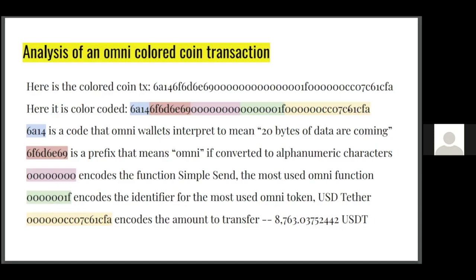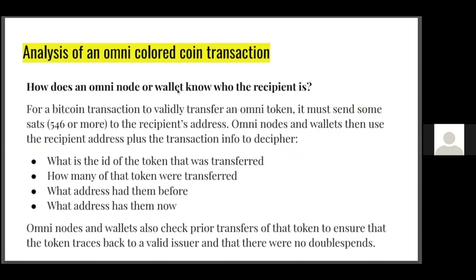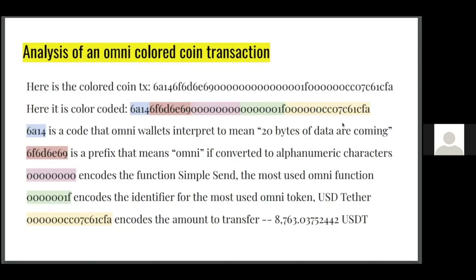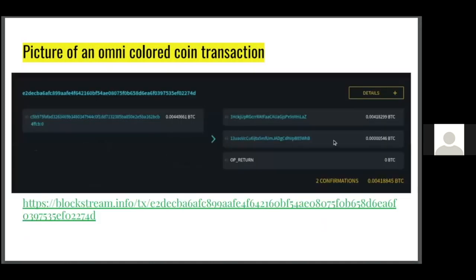The last part of the transaction encodes the amount — converting to approximately 8,763 units, so a little over $8,700 worth of Tether. Omni wallets also need to know the recipient, which is not encoded in this data. Instead, the recipient is identified by the output of 546 satoshis — the minimum a legacy address can receive. When an Omni wallet sees that 546-sat output, it knows those 546 sats signal who is receiving the Omni tokens, not a payment for goods.